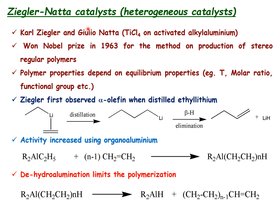The most important development came from the Ziegler-Natta catalyst, developed by Karl Ziegler and Giulio Natta, using titanium chloride and trialkyl aluminum — particularly triethyl aluminum. The active species is the coupled product of titanium chloride and alkyl aluminum, forming a back-site on the titanium surface. The key achievement of the Ziegler-Natta catalyst was preparing polymers with stereospecificity, for which they won the Nobel Prize in 1963. The polymer properties depend on temperature, molar ratio, and functional groups present on the monomer.